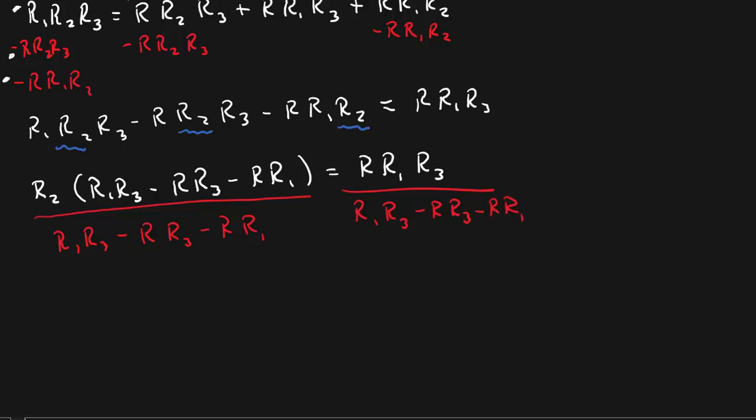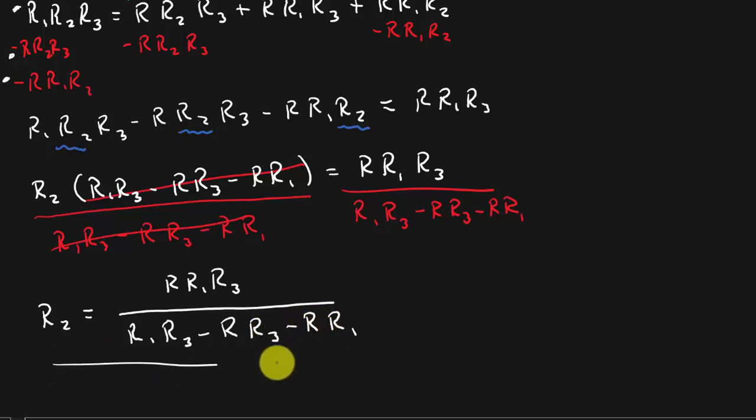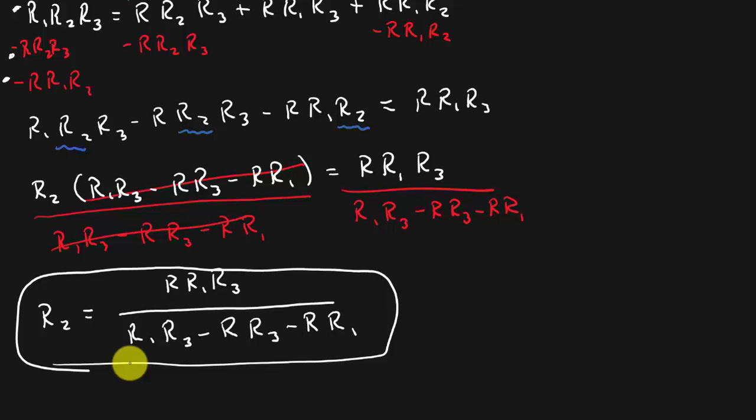And you can see over here these cancel and so I'm left with R2 is equal to R R1 R3 over R1 R3 minus R R3 minus R R1. And this is your answer.